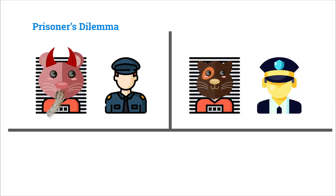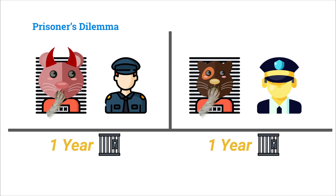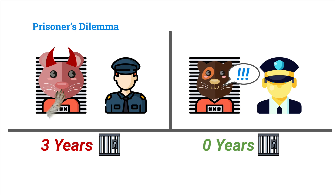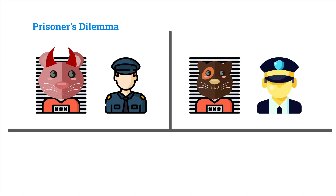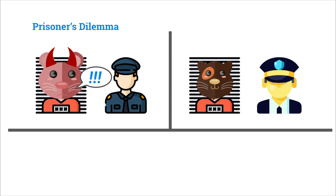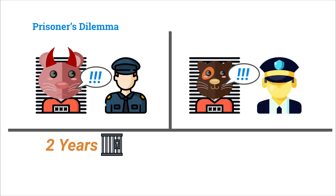If Mallory stays quiet and Bob also stays quiet, they both go away for one year on the misdemeanor charge. But if Mallory stays quiet and Bob confesses, he'll give the cops enough evidence to prove the bank robbery — so Mallory goes away for three years while Bob gets off scot-free. If Mallory confesses and Bob stays quiet, she gets released immediately while Bob goes away for three years. And if both confess, they each get put away for two years on felony charges.